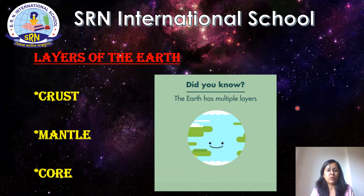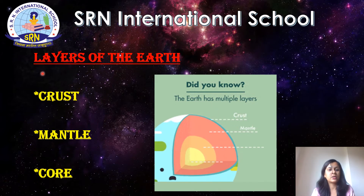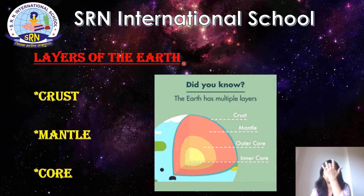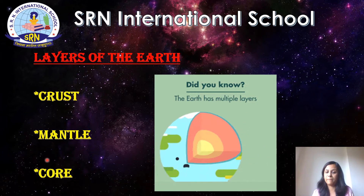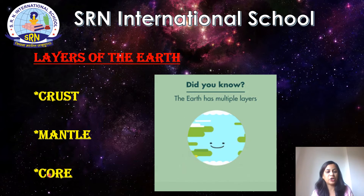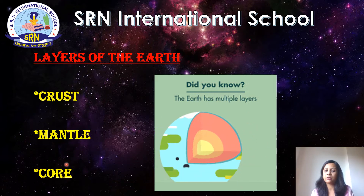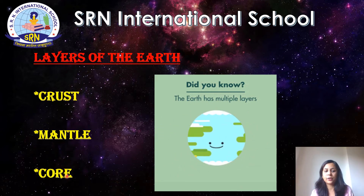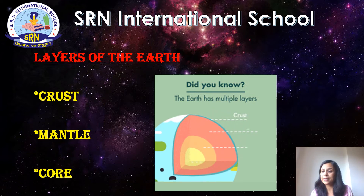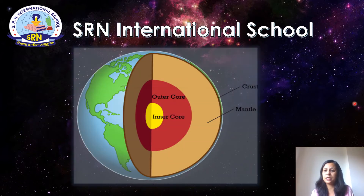Now, the earth is made up of three layers: crust, mantle, and core. The very first layer is the crust, and beneath the crust we have the mantle, and the innermost layer of the earth is the core. Let us study these layers one by one.